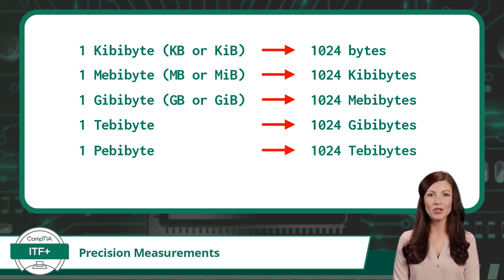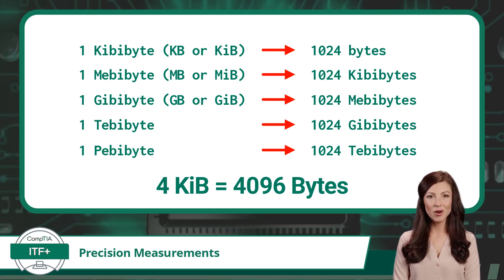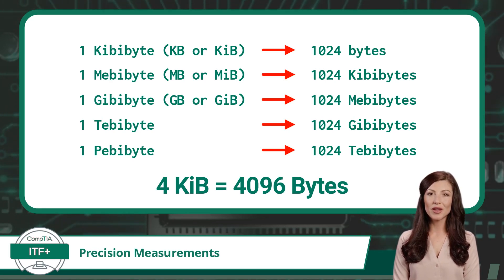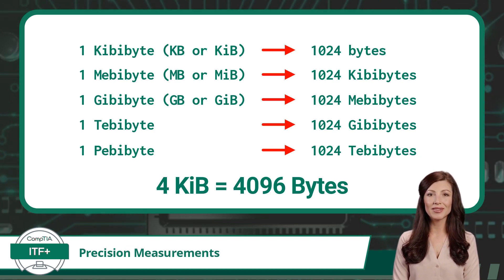Using our new knowledge of precision measurements, let's talk through a simple conversion. We are going to convert 4 kibibytes to bytes. Instead of 1000, our factor is now 1024. So we multiply 4 by 1024, and see that 4 kibibytes equals precisely 4096 bytes.